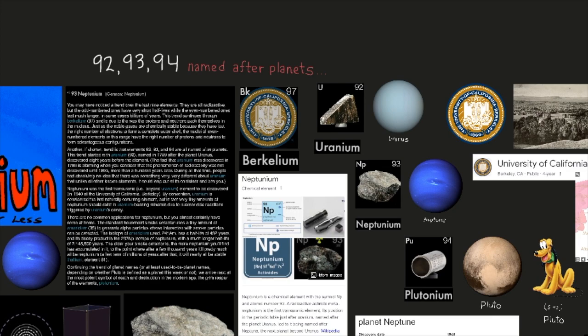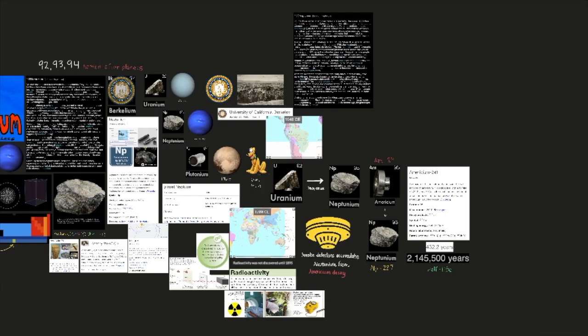Another trend is that elements 92, 93, and 94 are all named after planets. This trend started with uranium, element number 92, named in 1789 after the planet Uranus, discovered 8 years before the element. The fact that uranium was discovered in 1789 is alarming when you consider that the phenomenon of radioactivity was not discovered until 1895, more than 100 years later.